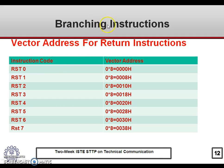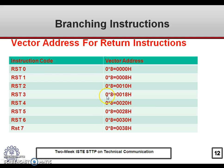The vector addresses for restart instructions are as follows. RST 0: 0 × 8 = 0000H. RST 1: 1 × 8 = 0008H. RST 2: 2 × 8 = 0010H. RST 3 through RST 7 follow the same pattern, with each RST number multiplied by 8, giving vector addresses 0000H through 0038H.